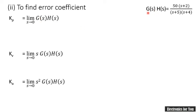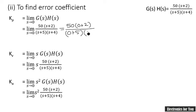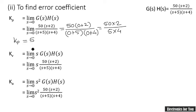Putting the values of G(s)·H(s) into the formula and applying the limit by substituting s = 0, we get: 50 × (0 + 2) / [(0 + 5)(0 + 4)] = 50 × 2 / (5 × 4) = 100 / 20. Therefore, Kp equals 5.